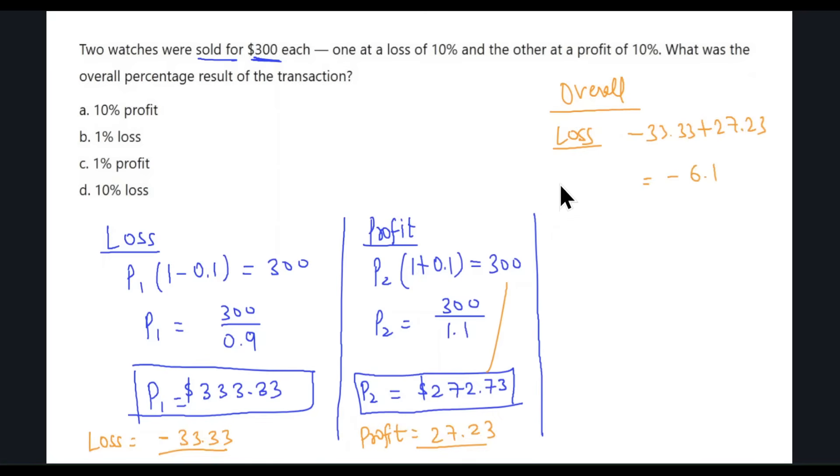To find the loss percentage, first we need to find the total buying price. The buying price will be P1 plus P2, that's $333.33 plus $272.73. So if we add this up, we get $606.06.